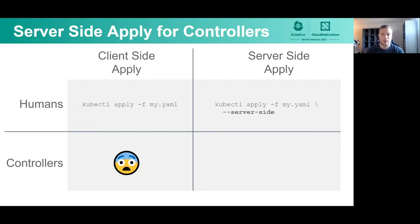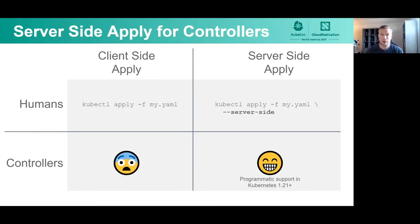For server-side apply, it's really easy to use. The user experience is almost the same as client-side, except you just add the --server-side flag and you get all the benefits. Now all the merging happens on the server. All of the fields are tracked on the server, so ownership is very clear. There's conflict detection and resolution that goes on on the server. It's a much better implementation of apply — I would recommend everybody switch to it. And conveniently, it's accessible to controllers. You don't need kubectl to access it. You can access it through the client-go API, and today I'm going to focus on a bunch of things that we've done to make this really convenient to use from controllers.